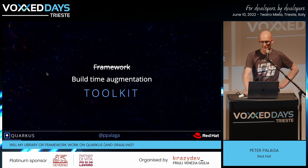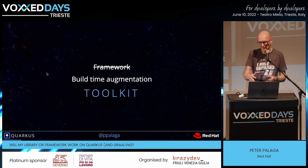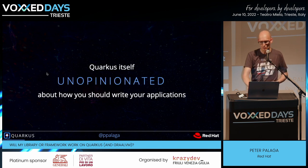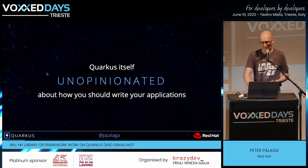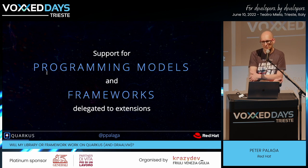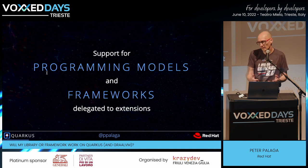So let's start with what is Quarkus. I like speaking about Quarkus as a build time augmentation toolkit. I don't think 'framework' would be a good classification for Quarkus because Quarkus itself has no strong opinion about how you should write your applications. Things like programming models and frameworks are delegated to Quarkus extensions. So if you want to code in a certain way, you need an extension — if you're lucky, the extension exists; if not, you may want to write one.